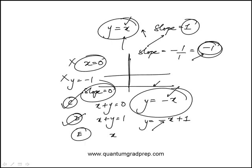And E is x minus y is 2. y is x minus 2. That has a slope of 1. So that is actually parallel to this.